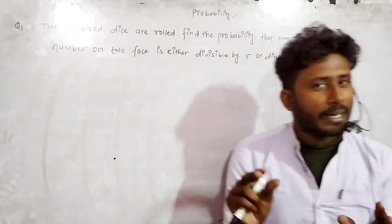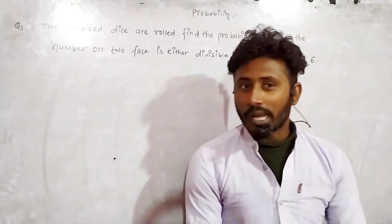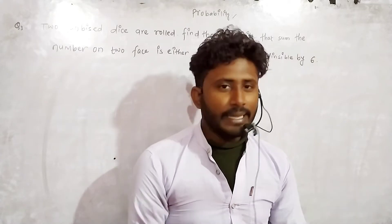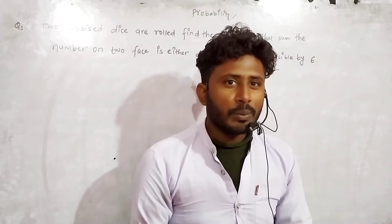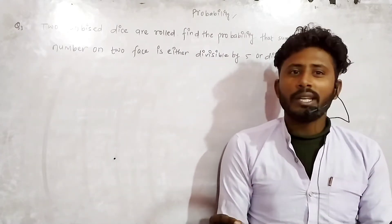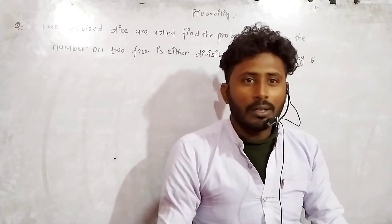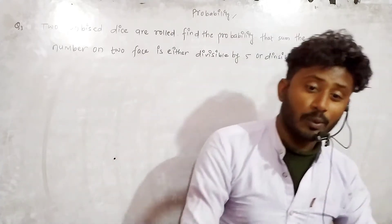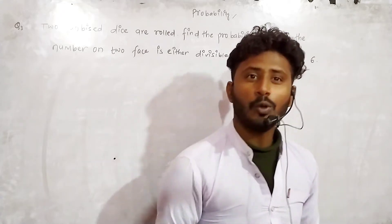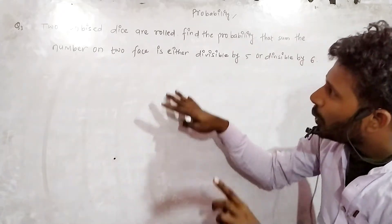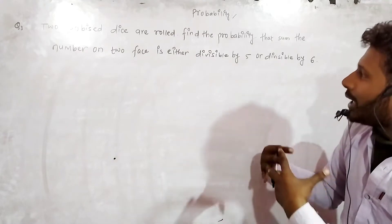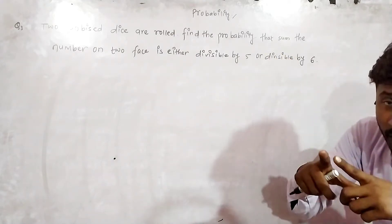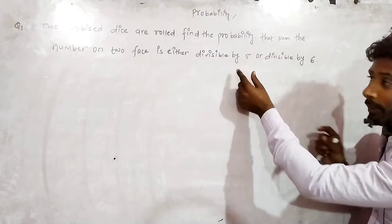We have two dice that we have to roll. When two dice are rolled, the total number of outcomes is 6 multiplied by 6, which gives us 36 total outcomes.